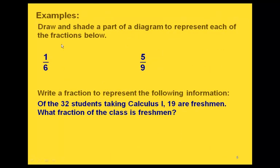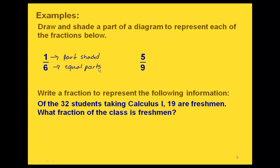Here are a couple of examples where we're going to draw and shade our own picture to represent the fractions. For 1 sixth, since 1 is our numerator, that's the number of parts that are shaded. Our denominator is 6, so that's the number of equal parts in our picture. If we do a long rectangle and divide it into six equal parts, we're only going to shade one of those parts.